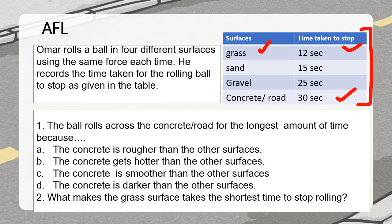The answer is C. The concrete is smoother than the other surfaces like gravel, sand, and grass — the road surface is smoother. Second question: what makes the grass surface take the shortest time to stop rolling? Why did the grass surface take only 12 seconds? Because grass is the roughest among all the surfaces given in the table.